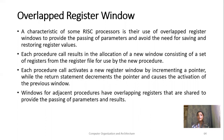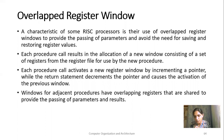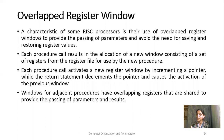The windows for adjacent procedures have overlapping registers that are shared to provide the passing of parameters and results. That means we are dividing registers into windows, and each window will have some registers that are owned by that procedure and some registers that will be shared by the previous and succeeding processes. Let me explain with one example.